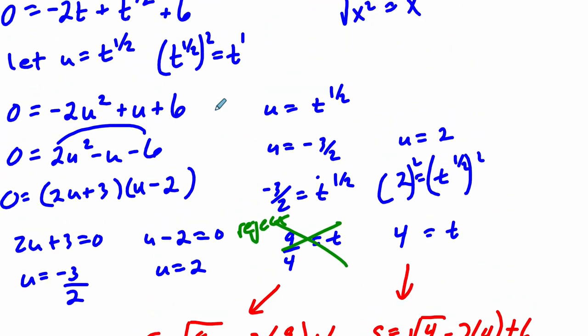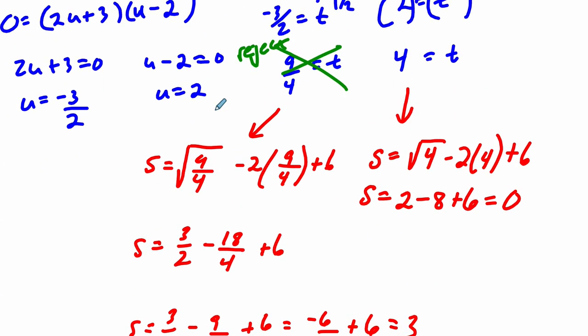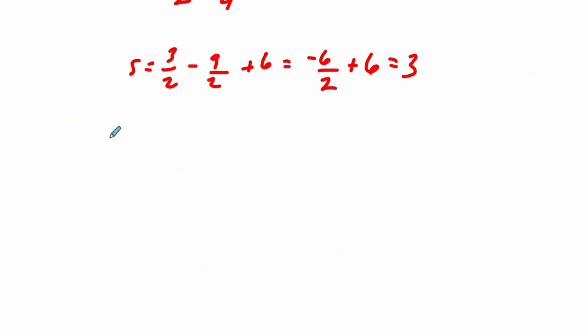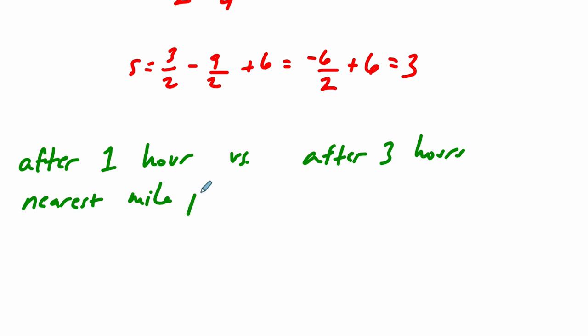Next, they ask you, the next part: How much faster was the tidal wave after one hour versus after three hours to the nearest mile per hour? And it says, justify your reasoning. Now, this is just a matter of plugging in t equals 1 and t equals 3.